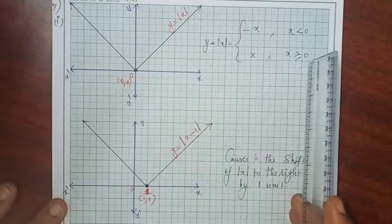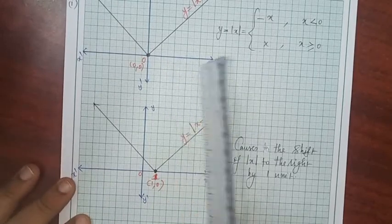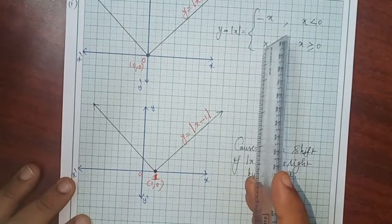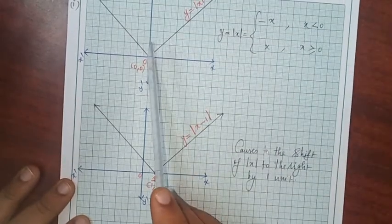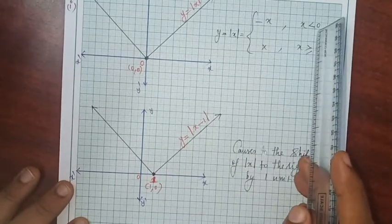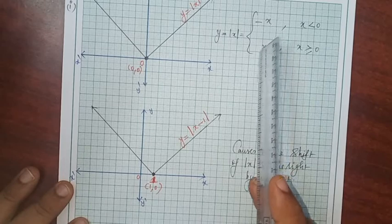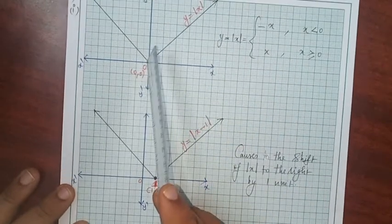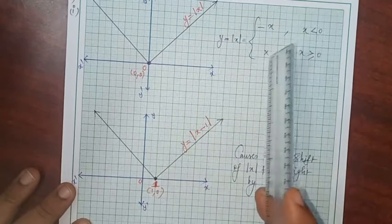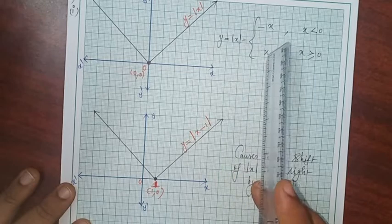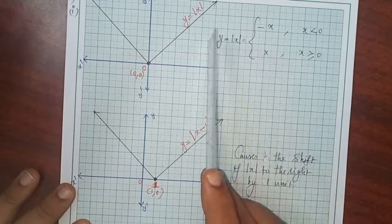For x greater than or equal to 0, you can take 1, 2, 3, 4, 5, 6, 7, 8 — any number. For example, take 5: modulus of 5 equals 5, which is positive. Now we can plot the points. Substitute x = 0: y = 0, giving point (0, 0). Next, x = 1: y = 1, giving point (1, 1).